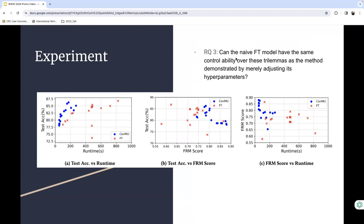And here, the last research question. We compare the controllability of CONMU and fine-tuning and evaluate the performance of two models based on three crucial factors. As is shown in the figure, CONMU displays superiority not only in the stability of controlling the trilemma, but also a significant margin over overall performance.